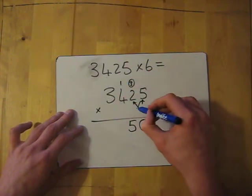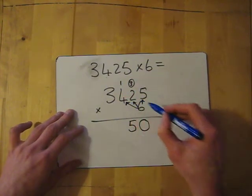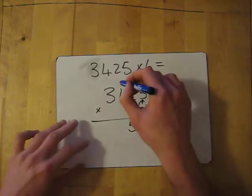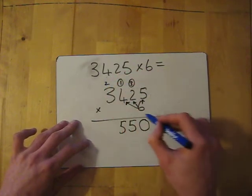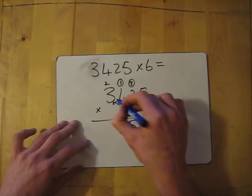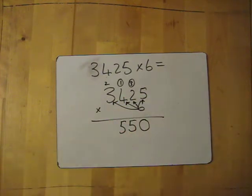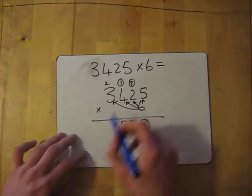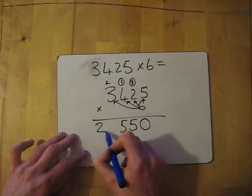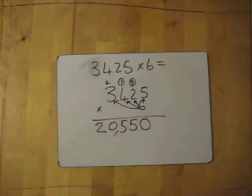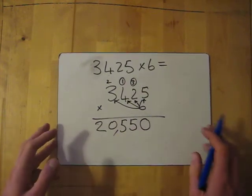Carry the 1. Then we will kill this number here. 6 times 4, 24. Add the 1, gives me 25. Carry the 2. And finally 6 times 3 is 18. Then add the 2, gives me 20. No other numbers to carry 2. So just write down the 20. So my answer is 20,550.